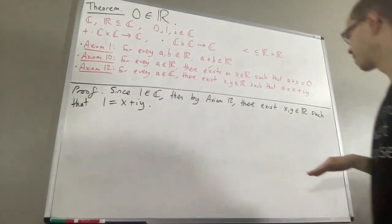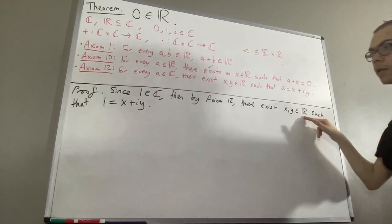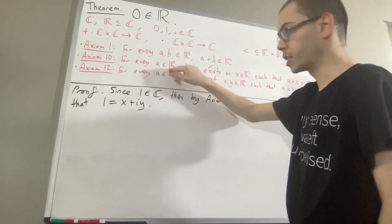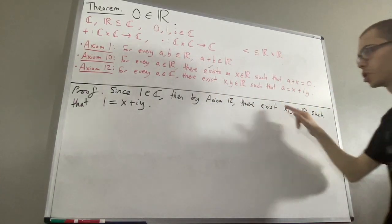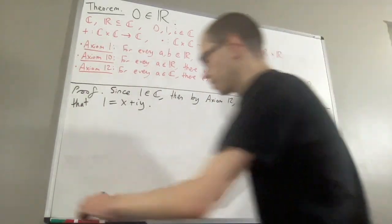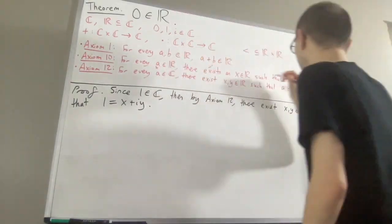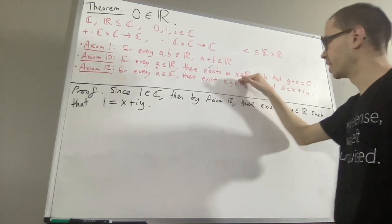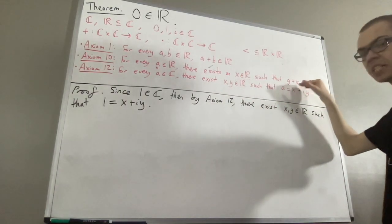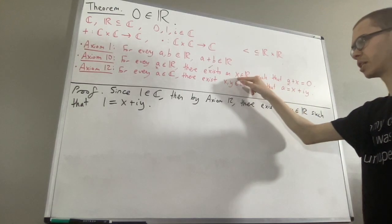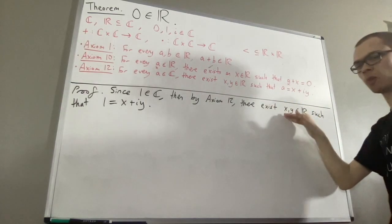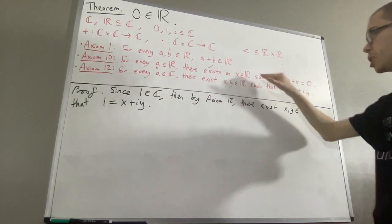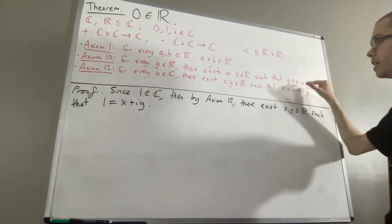But then, since X is a real number, and axiom 10 works for every real number, then in particular, it must work for the real number X. So, taking A to be X, well then, there exists a real number I'll call T such that X plus T is equal to 0. I'm not going to call it X because we already have an X in our proof. So, there exists a real number I'll call T instead, such that X plus T is equal to 0.